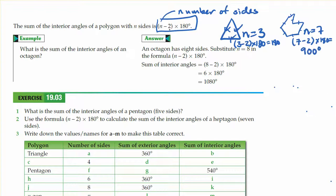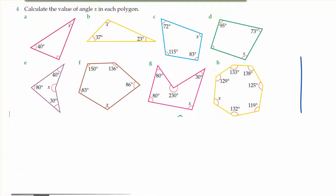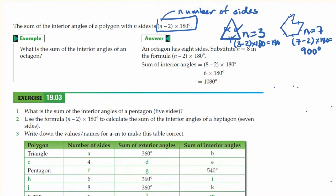So again, you replace the n with however many sides you have in the polygon. And this will tell you how many degrees are going to be inside of the shape if you were to add up all the angles inside of a polygon.